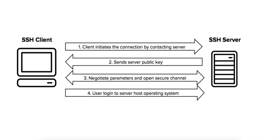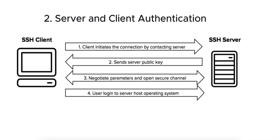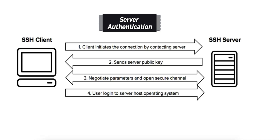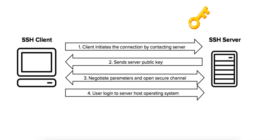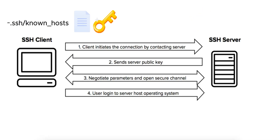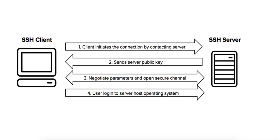The next two phases include server authentication and client authentication. For server authentication, the client verifies the server's identity using a digital signature. The client checks the server's public key against its known hosts file at ~/.ssh/known_hosts. The client trusts the server if the key matches, and the server proves its identity by digitally signing data that the client can verify using the server's public key.